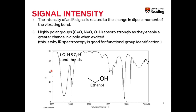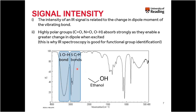We can see this in action for ethanol. There is a single O–H bond in ethanol, giving a very large peak, but five carbon-hydrogen bonds also present in ethanol give a much smaller peak. That's because the change in dipole moment for carbon-hydrogen bonds is much smaller than that for oxygen-hydrogen bonds — so even though there are five times as many C–H bonds, the O–H absorption is far larger.